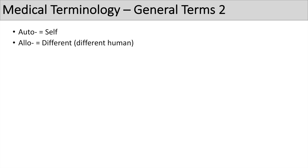Some more general terms: the prefix 'auto' means self. The next one is 'allo', which means different — more specifically, a different human within the same species. And that's in contrast to the prefix 'xeno', which also means different but usually of a different species — it also means foreign or alien.